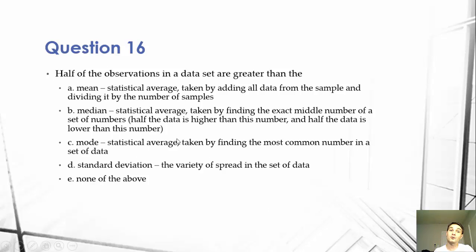C mode, that is a statistical average taken by finding the most common number in a set of data, and D, a standard deviation is the variety of spread in the set of data. So we've talked about that some. It talks about variance and how wide the spread is within the data.